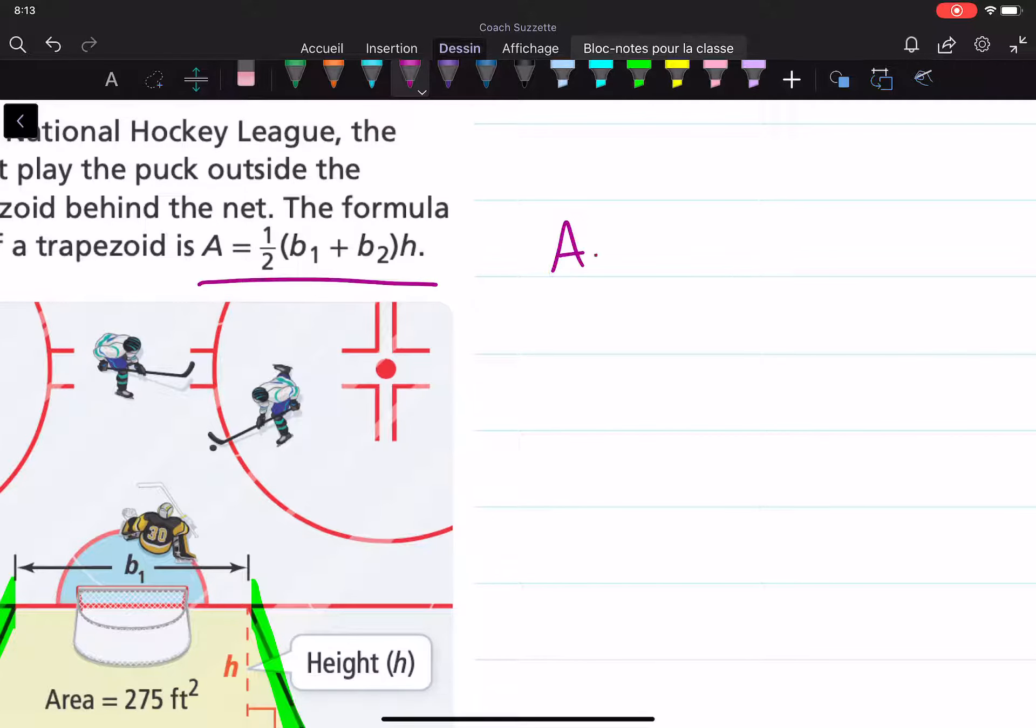First, let me rewrite this. Let's understand that one-half times h is the same as h over 2 times the quantity b₁ plus b₂.